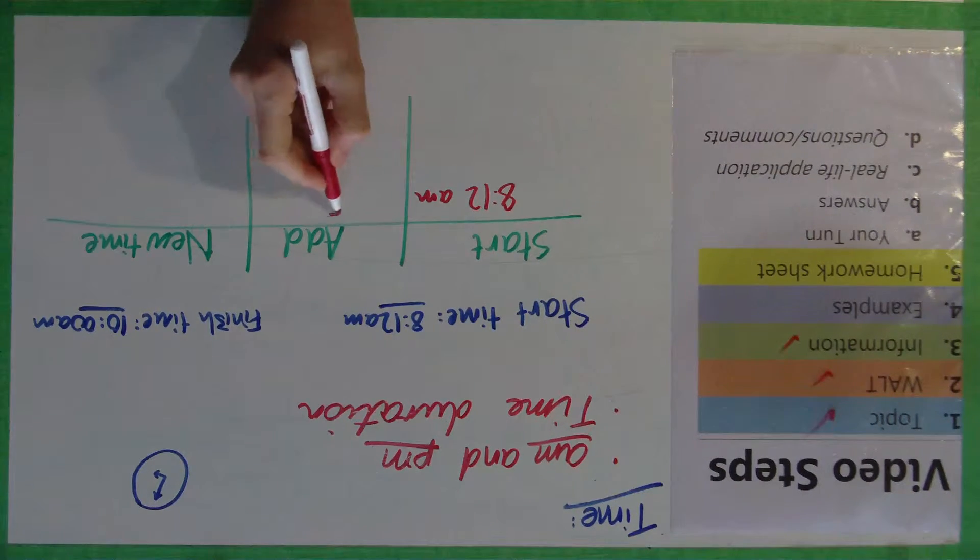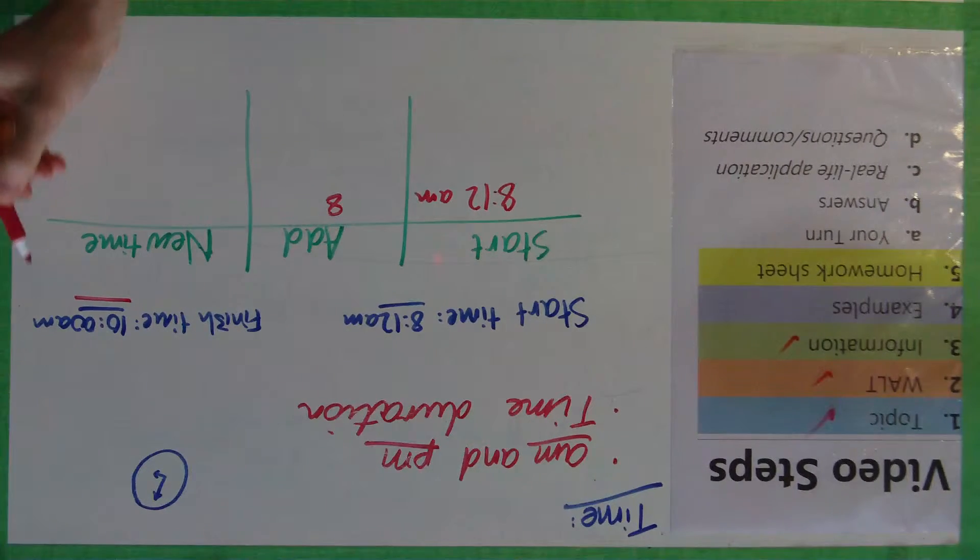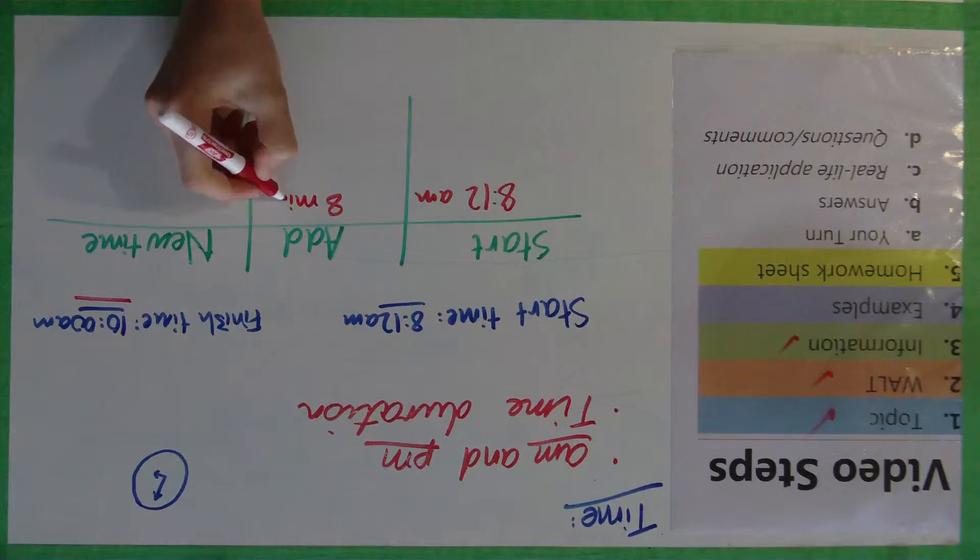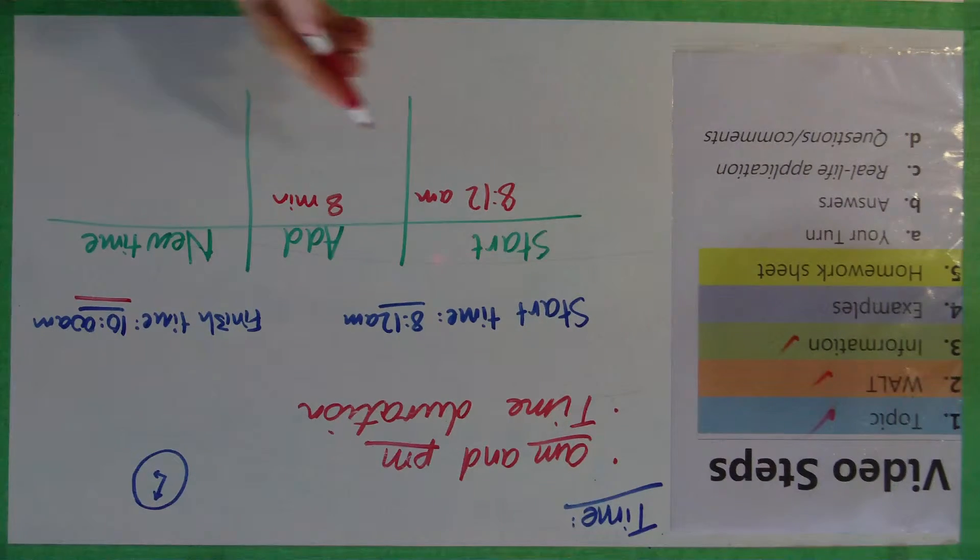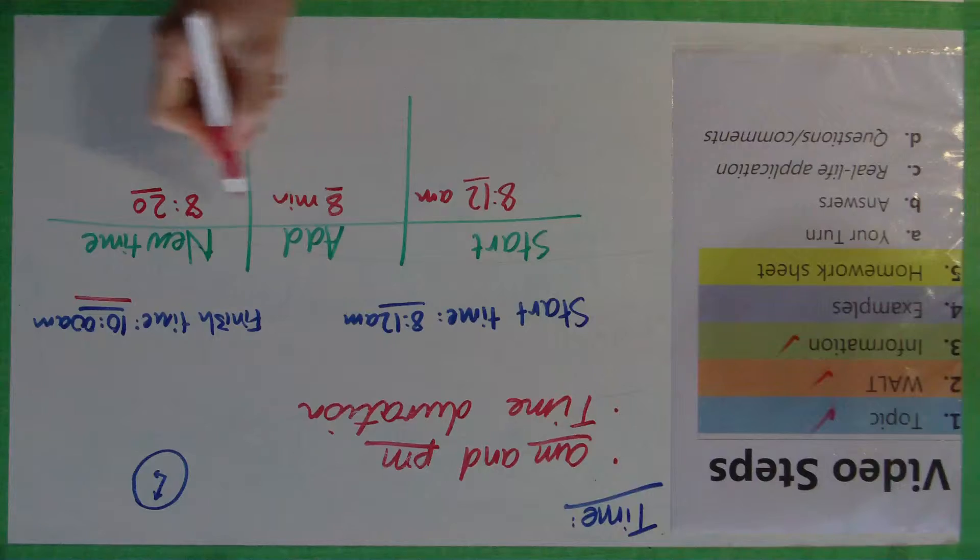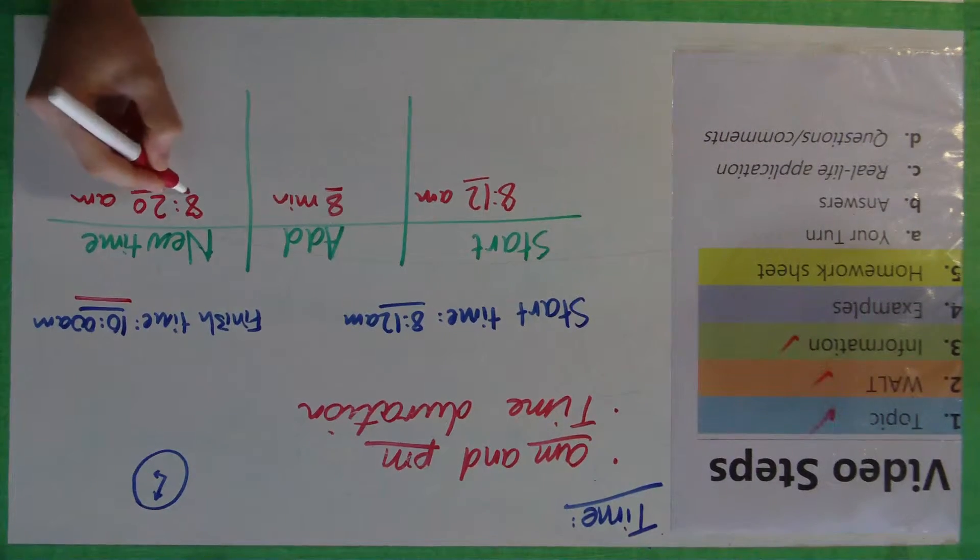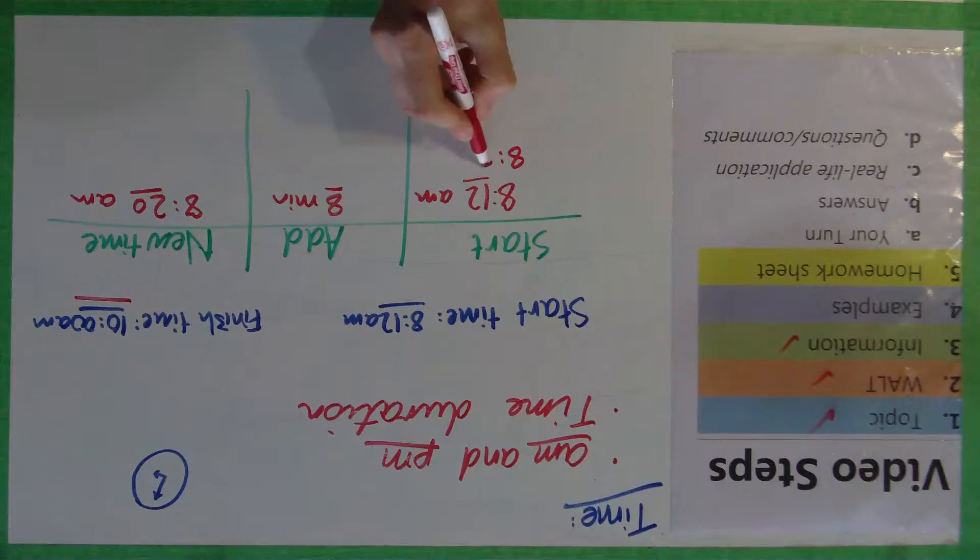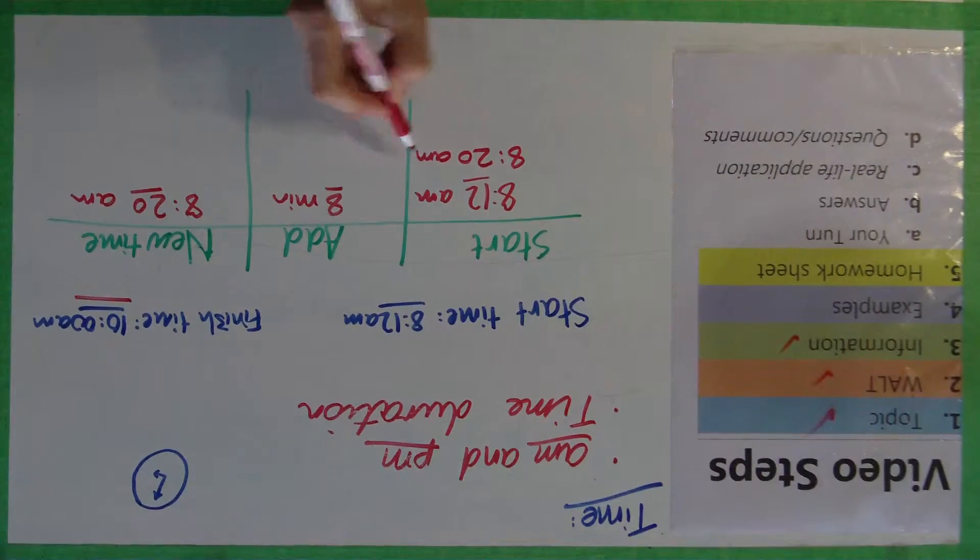So all I need to do is have my start, add, and then new time. So I'm going to get my little table. I know I said this is a t-chart method, but it's actually three columns. Really it's just a table method. So we start off at 8:12 a.m. And, well, I'm just going to add eight minutes.